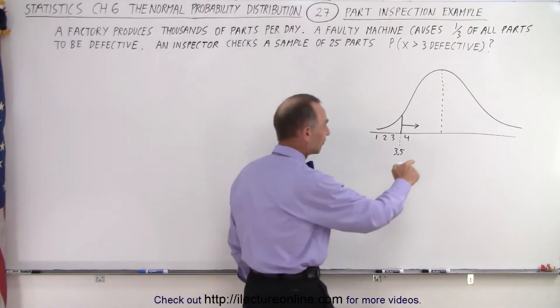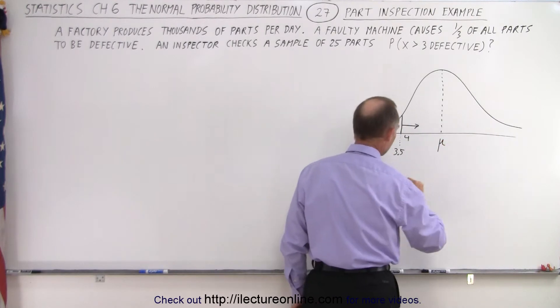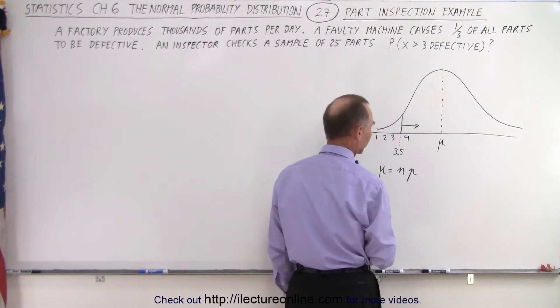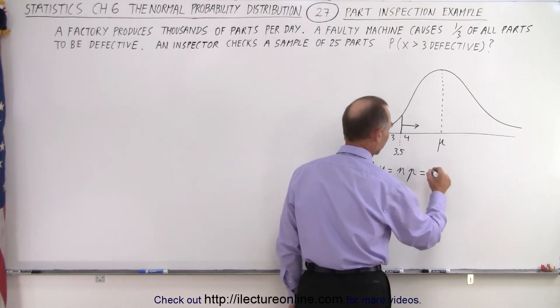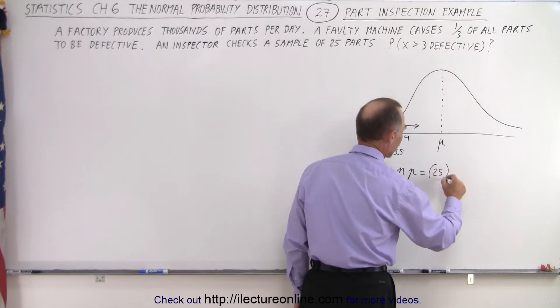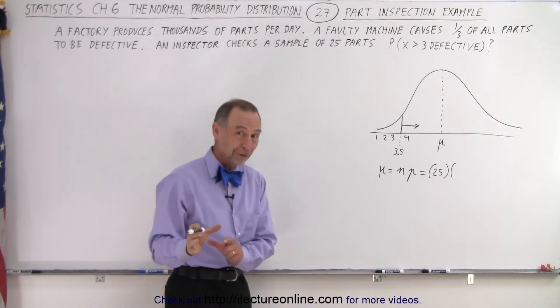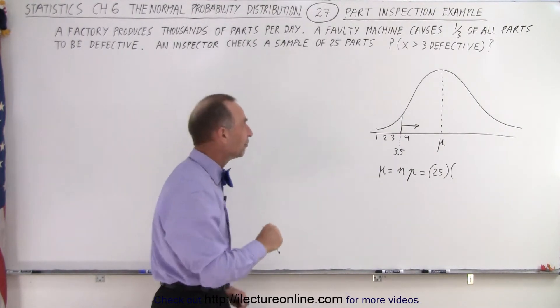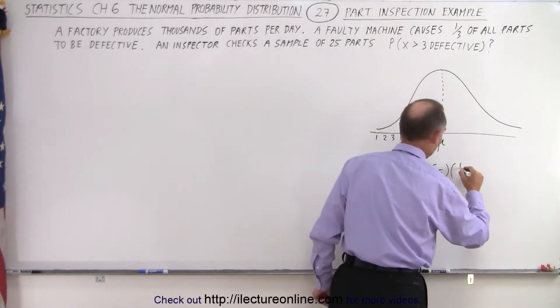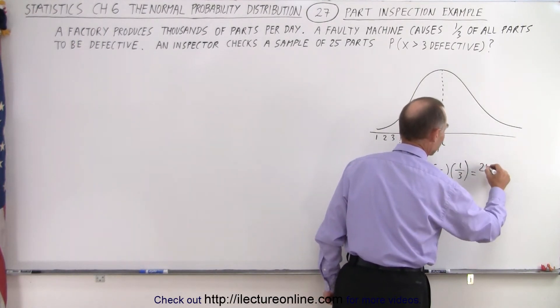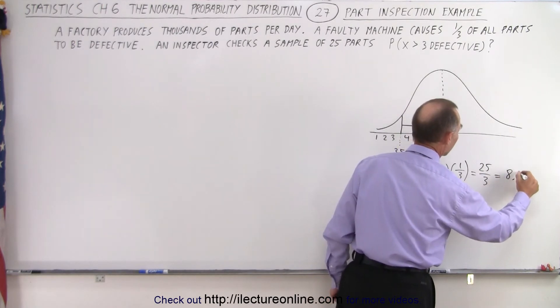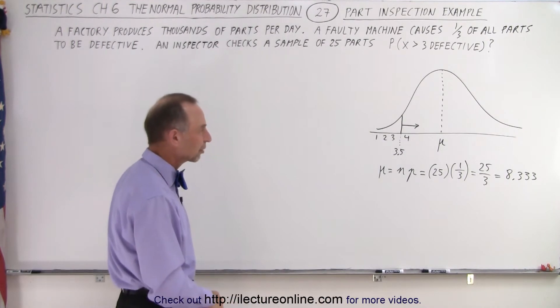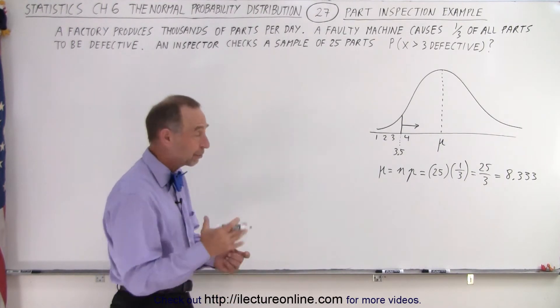All right, so first of all, we need to find the mean, and the mean can be found by taking the number of samples times the probability of success. So in this case, the number of samples will be 25, and the probability of success, well, it's kind of weird because we're looking for defective parts, but that would be the success, the success of picking a defective part. And since one-third of all parts are defective, that would be one-third, which is 25 over 3, which is 8.333 for the mean. So that's the average number of defective parts I would expect to find when the sample of 25 are chosen.